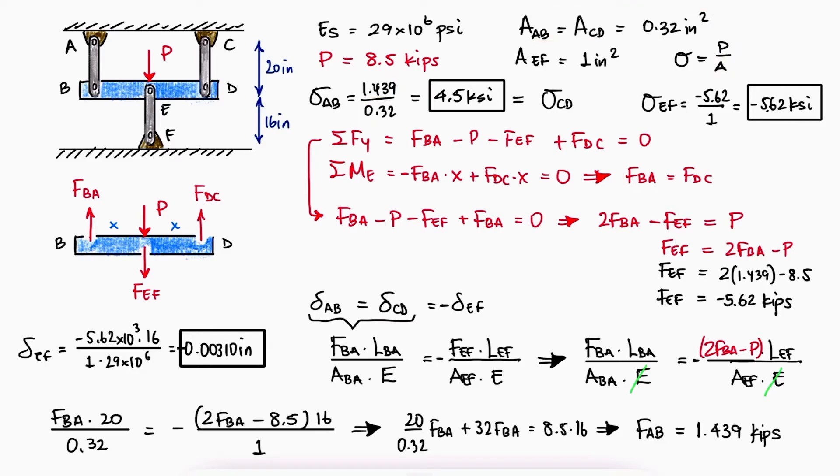Those normal stresses are positive since AB and CD are under tension, and stress EF is negative since rod EF is subjected to compression.